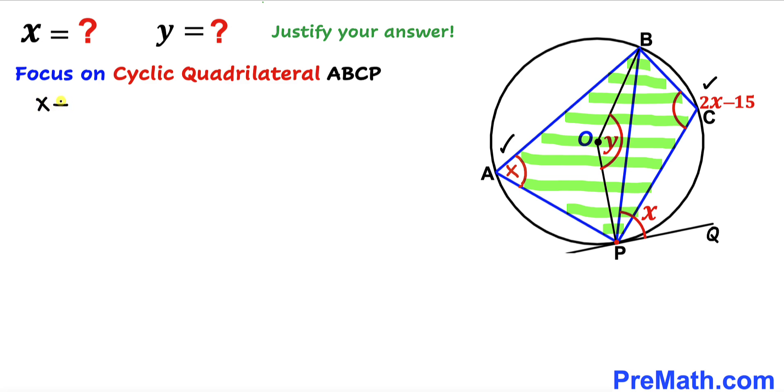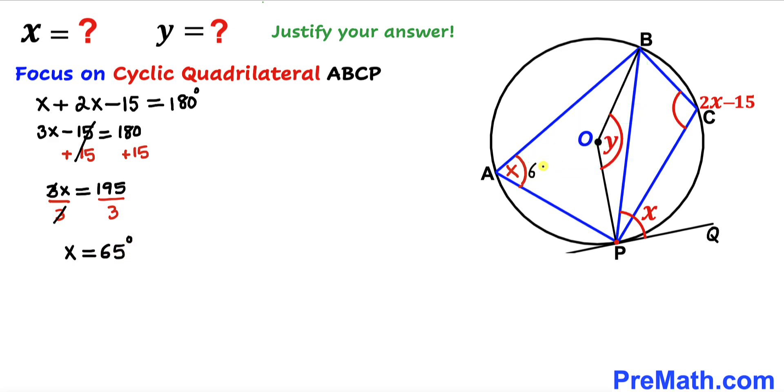Let me write this down: angle X plus the other angle 2X minus 15 must equal 180 degrees. Combining like terms gives us 3X minus 15 equals 180. Add 15 to both sides: 3X equals 195. Divide both sides by 3, and our angle X turns out to be 65 degrees.